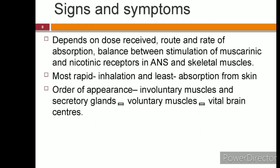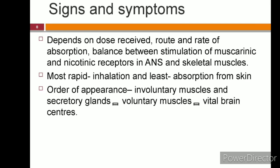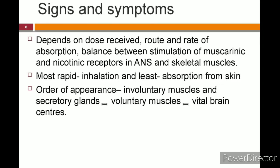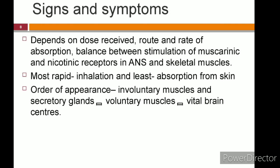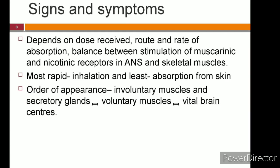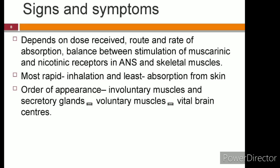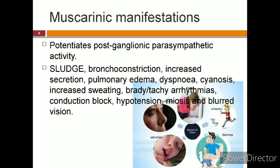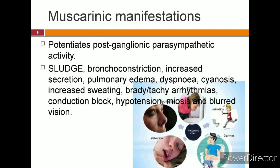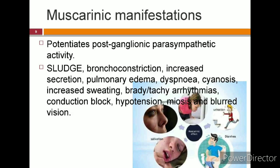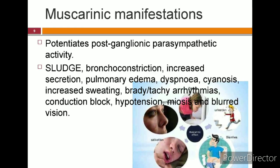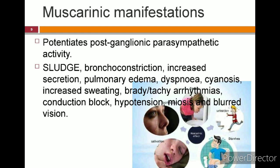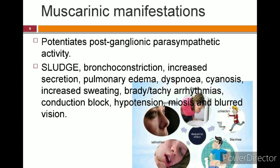The signs and symptoms depend on the dose received, route and rate of absorption, and the balance between stimulation of muscarinic and nicotinic receptors in the autonomic and skeletal muscles. Poisoning by inhalation causes the most rapid onset of symptoms, whereas least absorption is through the skin. Involuntary glands are affected first, followed by voluntary muscles, and lastly the vital brain centers. In organophosphorus poisoning, clinical features are divided into muscarinic, nicotinic, and CNS manifestations. Muscarinic effects involve increased post-ganglionic parasympathetic activity. The mnemonic is SLUDGE: increased Salivation, Lacrimation, Urination, Defecation, GI symptoms, and more. In the respiratory system, there is increased secretion and bronchoconstriction, blocking the tracheobronchial tree, which can lead to pulmonary edema and dyspnea.